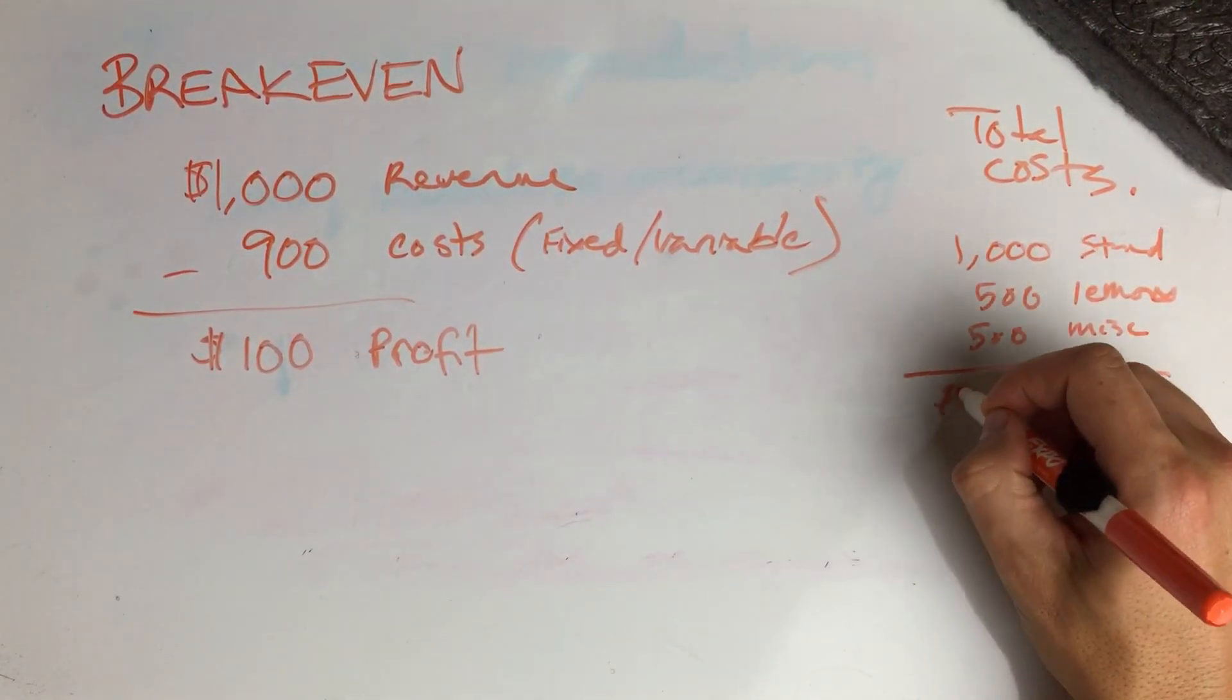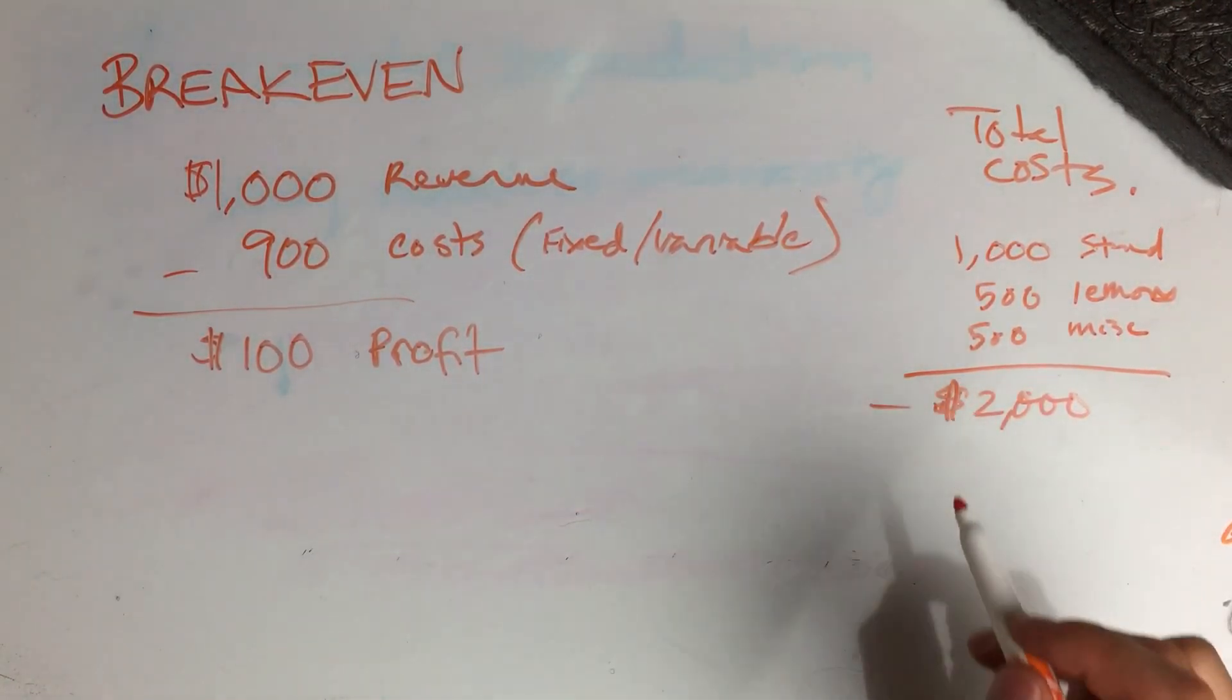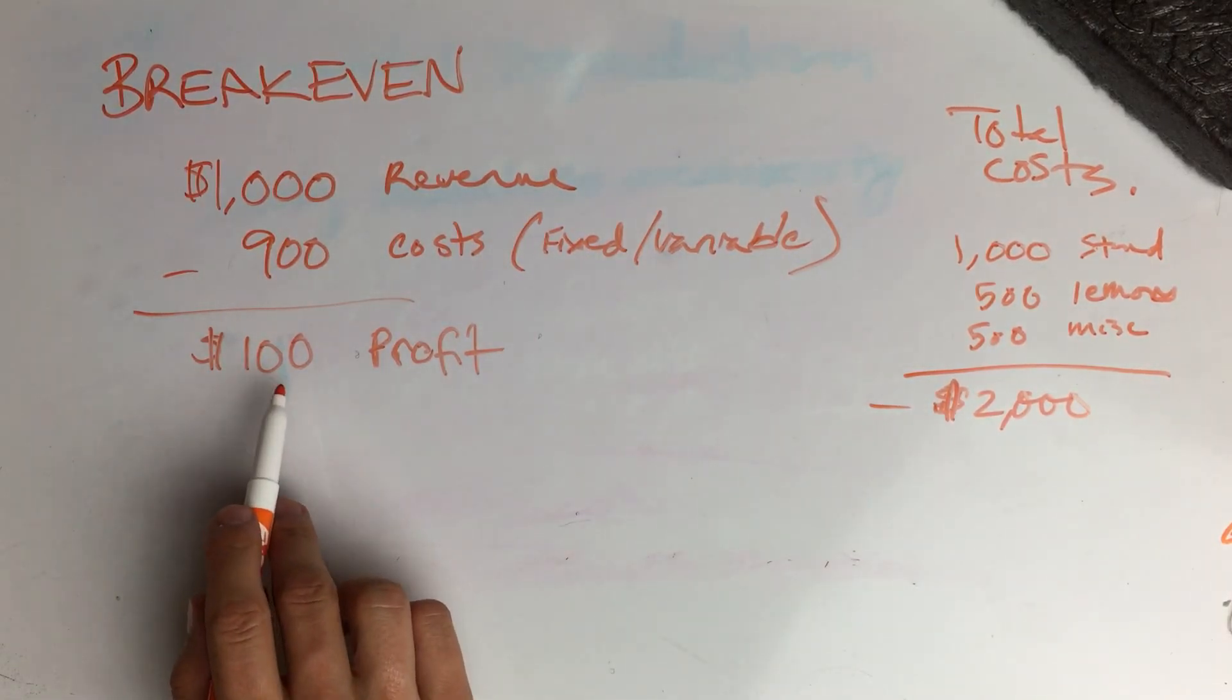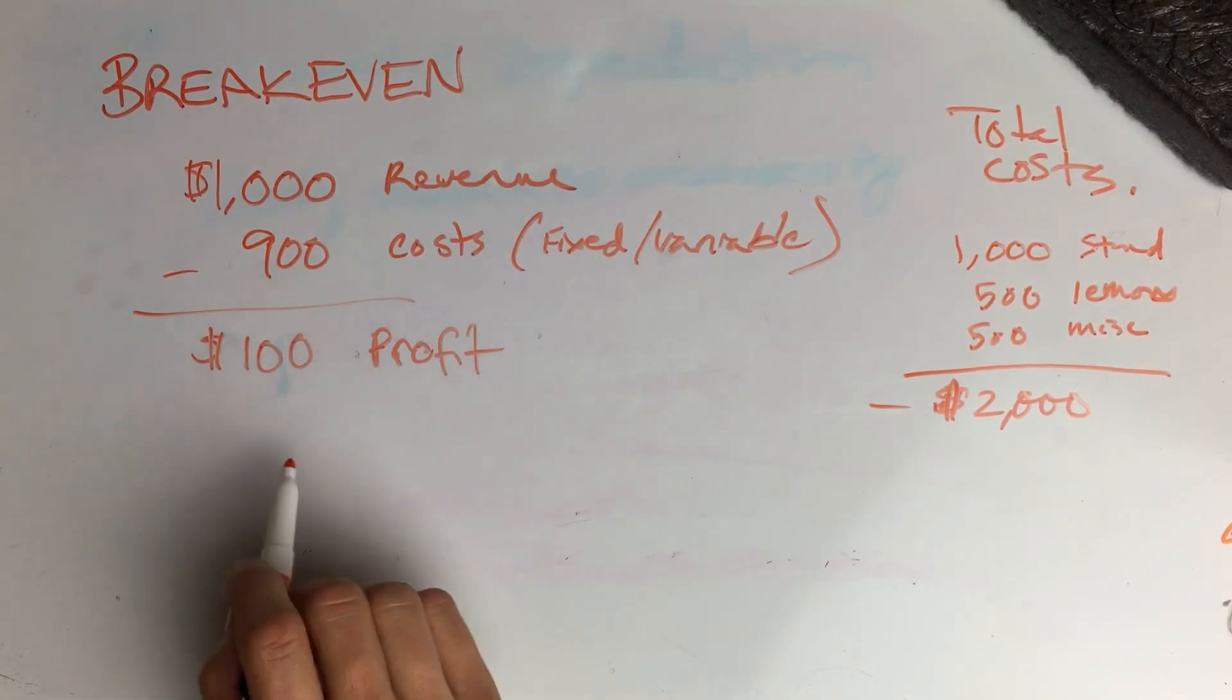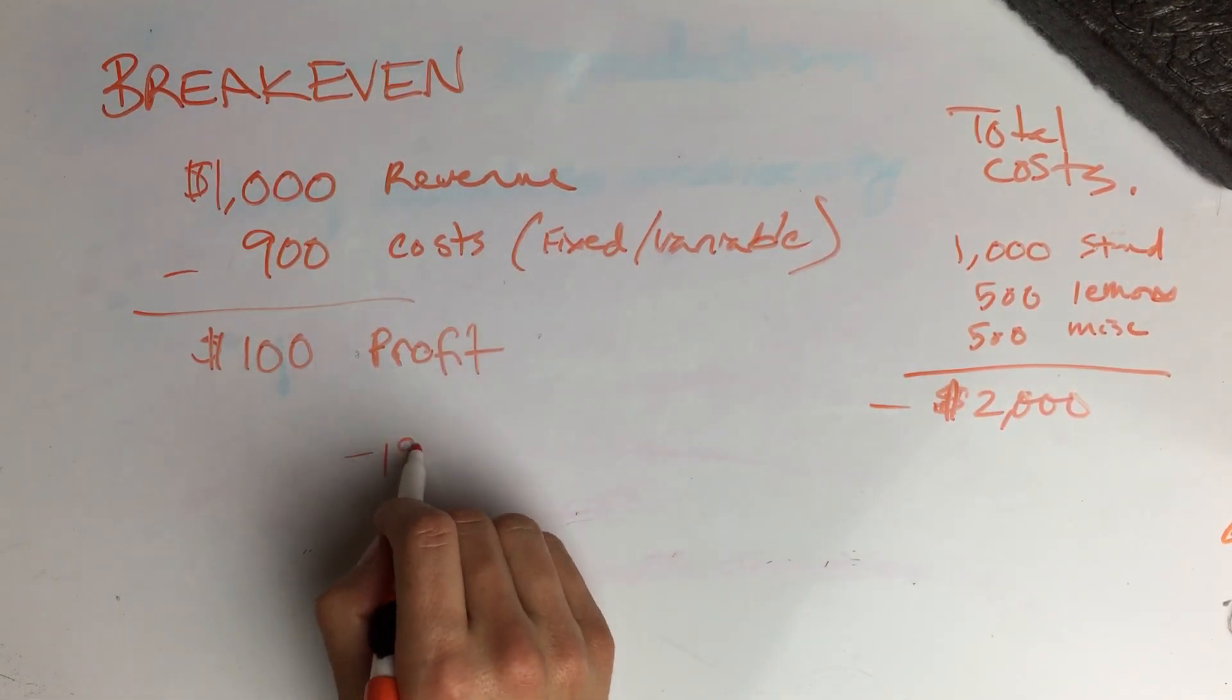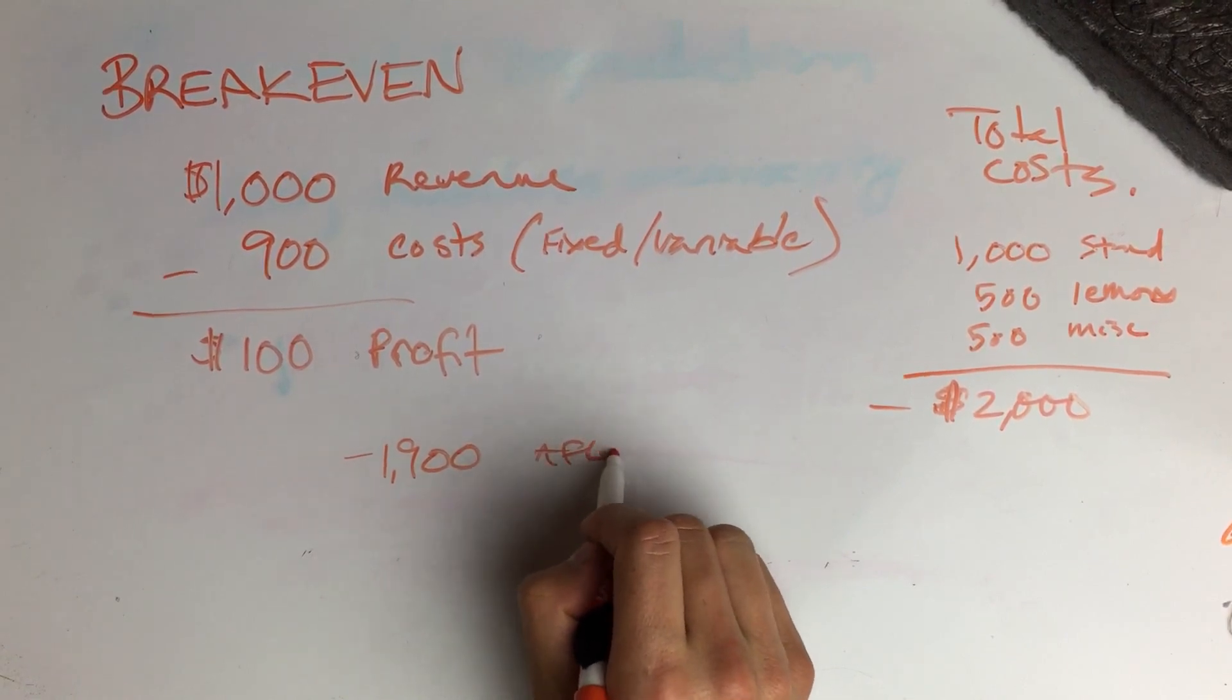So there you're actually $2,000 in the hole, negative costs to get up and running. So if you make $100 in profit on month one, you are still, do the math, $1,900 in the hole after one month.